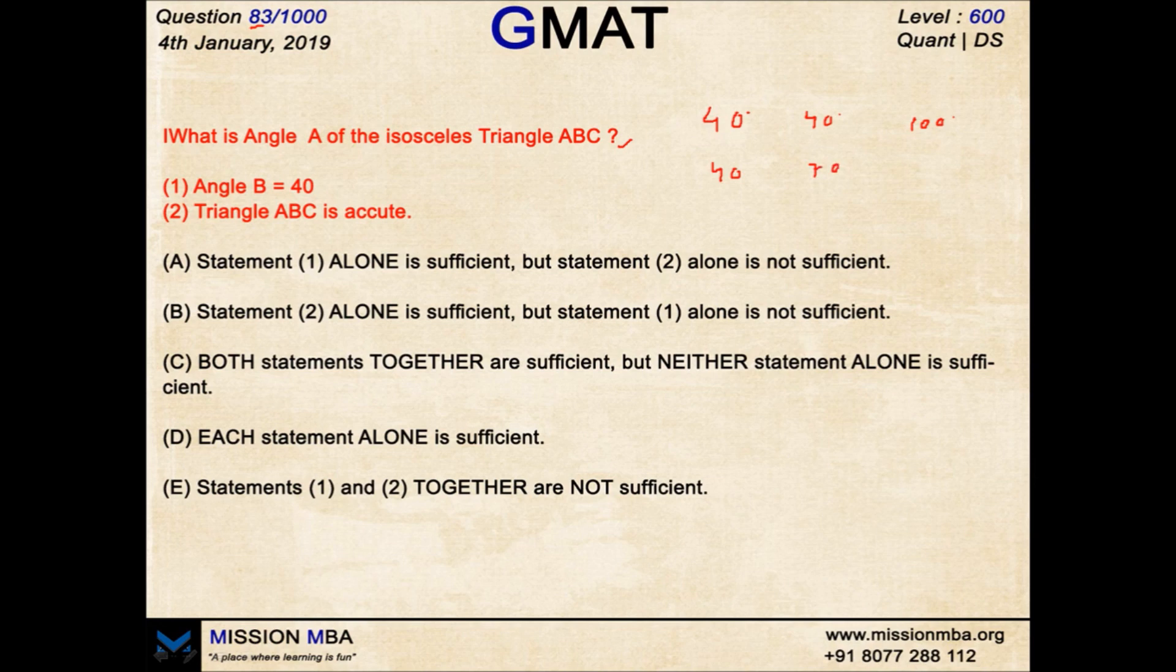So I do not know what is angle A and what is angle C. Now statement 2 tells me that triangle ABC is acute. Alone, it is definitely not sufficient because I do not know any of the angles.